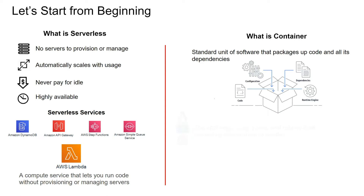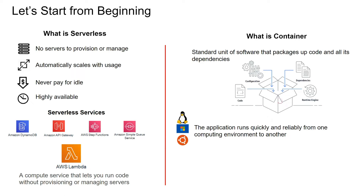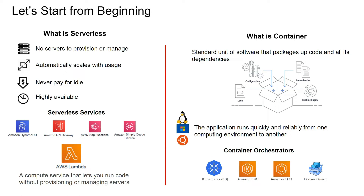The advantage is since everything is packaged up, the application runs quickly and reliably from one computing environment to another. Now let's take a look at some of the popular container orchestrators. We have Kubernetes, Amazon EKS, ECS, and Docker Swarm. If you want to know more about container orchestrators and the difference between EKS, ECS, and Fargate, take a look at my other video — I'll put it in the description.